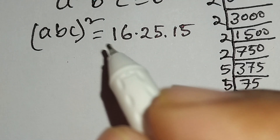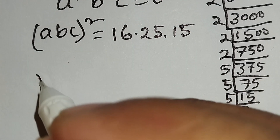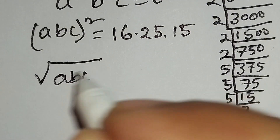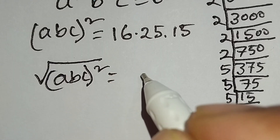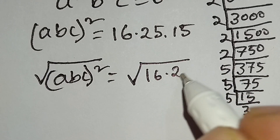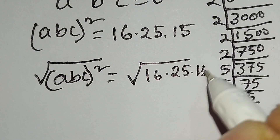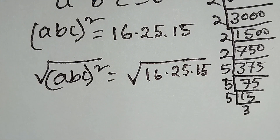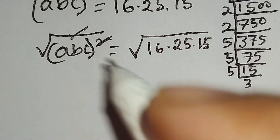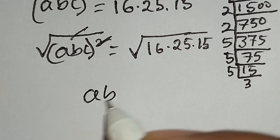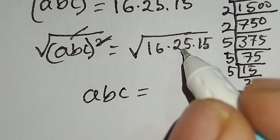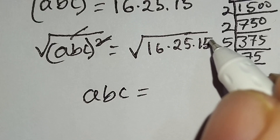Now we will take the square root on both sides. So we can write the square root of (ABC)² is equal to the square root of 16 times 25 times 15. The square and square root cancel out, so ABC is equal to the square root of 16 times 25 times 15.